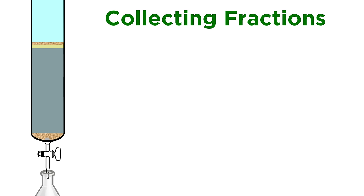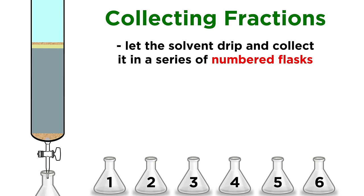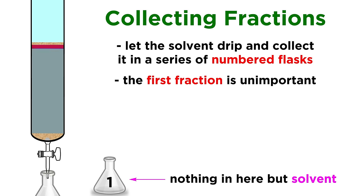Now the sample is loaded and we are ready to start. Let the column start to drip, and we will collect in a series of small flasks, each of which is referred to as a fraction. We don't have to be too careful with the first fraction, because we know that our sample is still way up at the top of the column, and none of the components will travel faster than the solvent. But depending on how polar the solvent system is, we will soon want to pay a bit more attention.